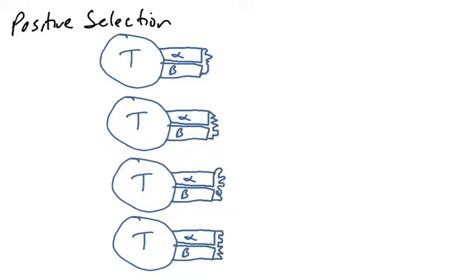Recall that we were getting all sorts of interesting shapes in the antigen binding site of our T cell receptor due to VDJ recombination in the alpha chain and the beta chain. So we've got this unique and specific three-dimensional structure in our T cell receptor, but what we don't know is whether that structure is going to be useful in checking our MHCs.